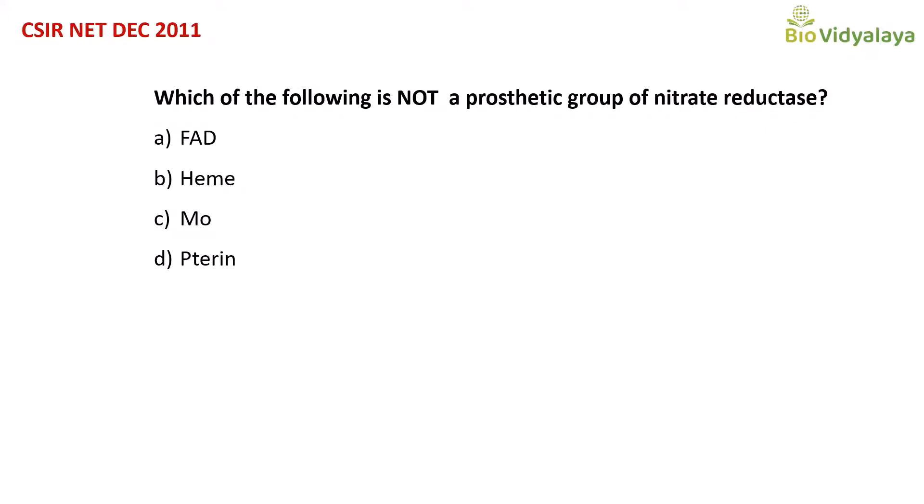This is the question from CSIR NET December 2011. The question is: which of the following is not a prosthetic group of nitrate reductase? Options are: option A, FAD; option B, heme; option C, molybdenum; option D, taurine. The function of nitrate reductase is to convert nitrate to nitrite.